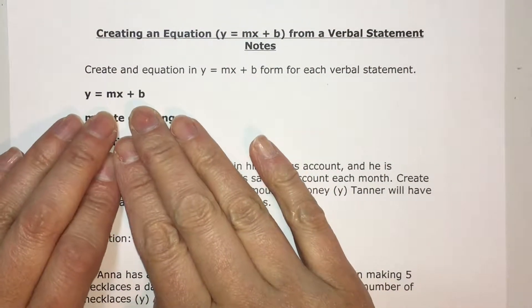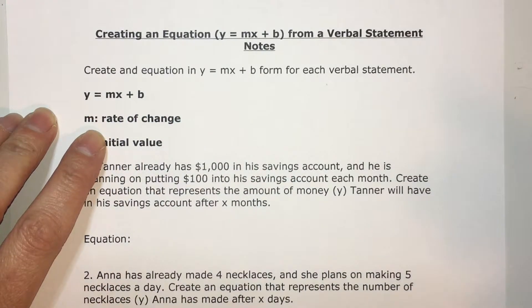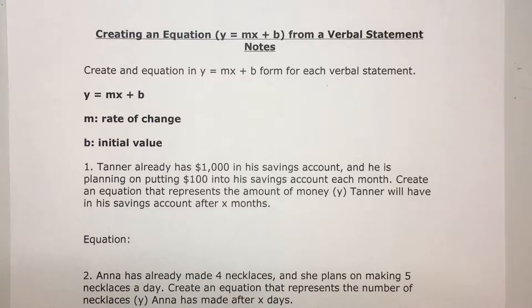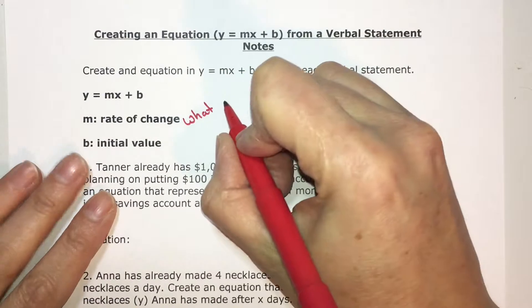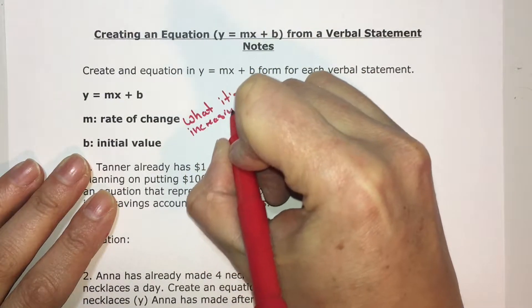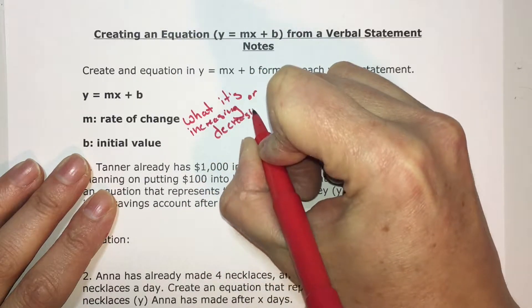y equals mx plus b is slope-intercept form. m is your slope, which is the same thing as the rate of change. If you're given a verbal statement, rate of change means how quickly something's changing. Most of the time when it's a verbal statement, it's what something is increasing or decreasing by.